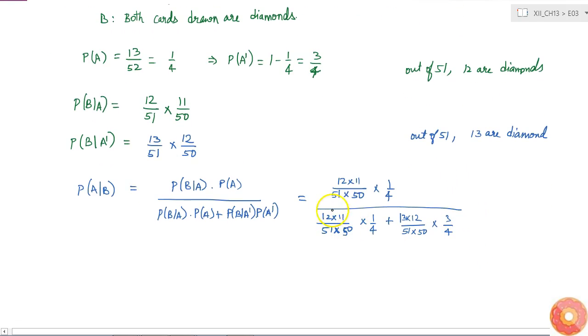If I cancel these denominators because they are common, I can simplify it as 12 times 11 times 1, divided by 12 times 11 times 1 plus 13 times 12 times 3. If I can cancel 12 also from the numerator and denominators, I will get 11 divided by 11 plus 13 times 3, which is 39, which will be equal to 11 by 50. This is our answer.